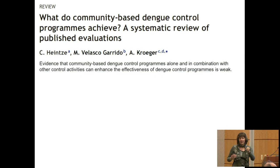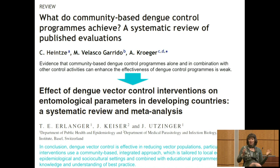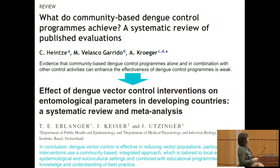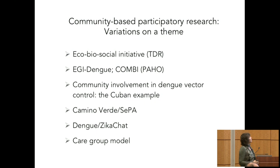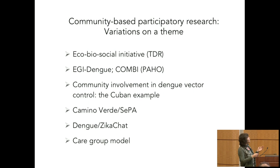For a long time there's been a concept of involving communities, but there's been a bias against it — people feel it hasn't been shown to be productive, quantified, or impactful. Recently, however, there has been a shift. Meta-reviews have concluded that when interventions use a community-based integrated approach tailored to local epidemiology and sociocultural settings, combined with educational programs, this is actually best practice.